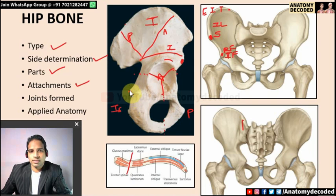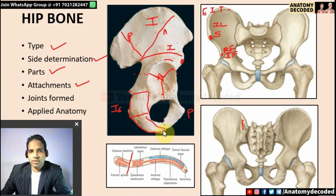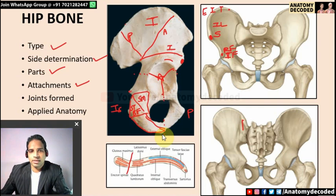Near the ischial spine and lesser sciatic notch: superior gemellus in the upper part, inferior gemellus in the lower part. The ischial tuberosity is divided into an upper quadrangular area and a lower triangular area. The upper quadrangular lateral part gives attachment to semimembranosus; the medial part gives attachment to semitendinosus and the long head of biceps femoris. The lower triangular lateral part attaches adductor magnus; the medial part is subcutaneous.